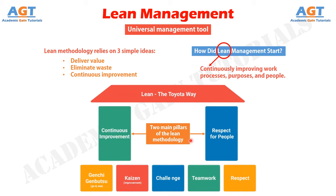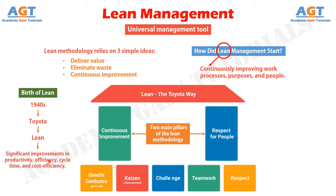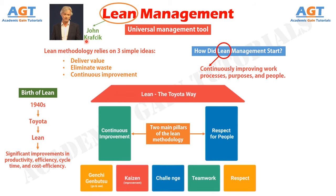Currently, lean management is widely adopted across various industries. However, it has actually derived from the Toyota Production System, established around 70 years ago. Back in the late 1940s, when Toyota laid the foundations of lean manufacturing, they aimed to reduce processes that don't bring value to the end product. By doing so, they achieved significant improvements in productivity, efficiency, cycle time, and cost efficiency. This notable impact led lean thinking to spread across many industries and evolve into five basic principles, as described by the Lean Management Institute. The term 'lean' was coined by John Krafcik — currently CEO of Google's self-driving car project Waymo — in his 1988 article 'Triumph of the Lean Production System.'